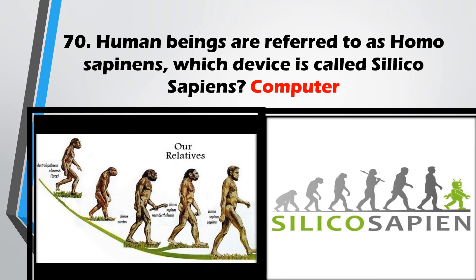Question No. 70: Human beings are referred to as Homo sapiens. Similarly, which device is called Silikosapiens? The computer is named Silikosapiens, derived from the word Silicon.